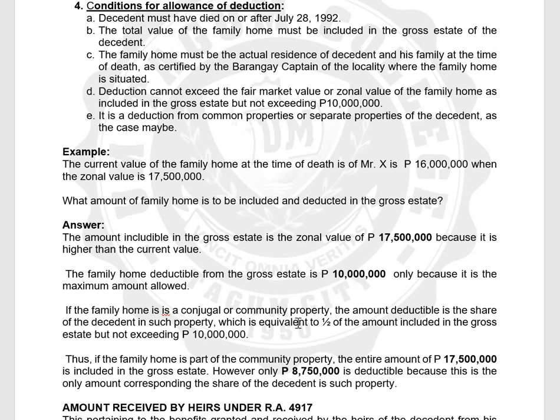There are instances where the land is an exclusive property and the house/building is a common property. In that case, the land is included at its full value (exclusive), and the building's value is divided by 2 (common share), then they are added together and compared to the P10 million maximum. If the entire property (land and building) is common, divide the entire value by 2.